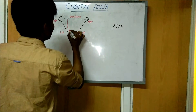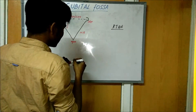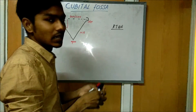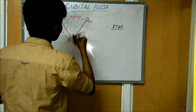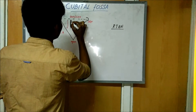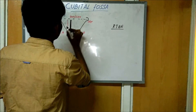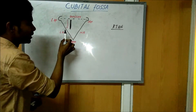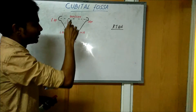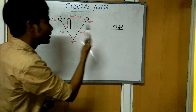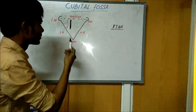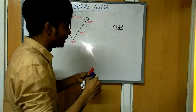The first structure — 'R' stands for radial nerve. The second one is the tendon of biceps brachialis. In the lateral side, the first structure is the radial nerve; a little medial or lateral side is the tendon of biceps brachialis.